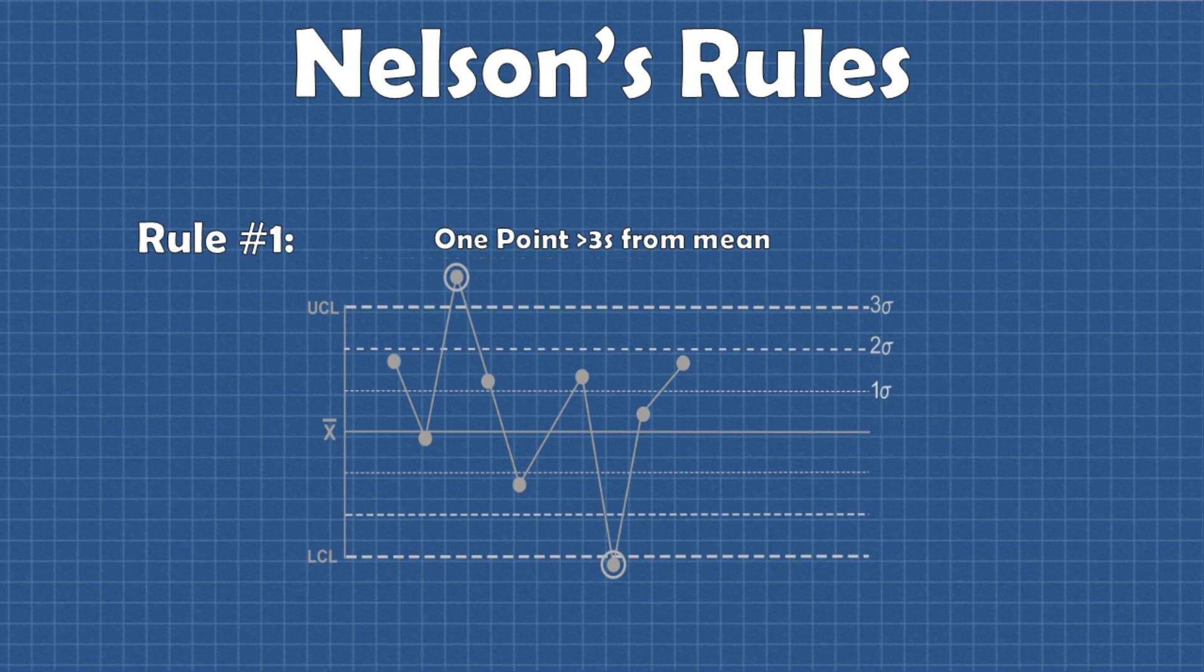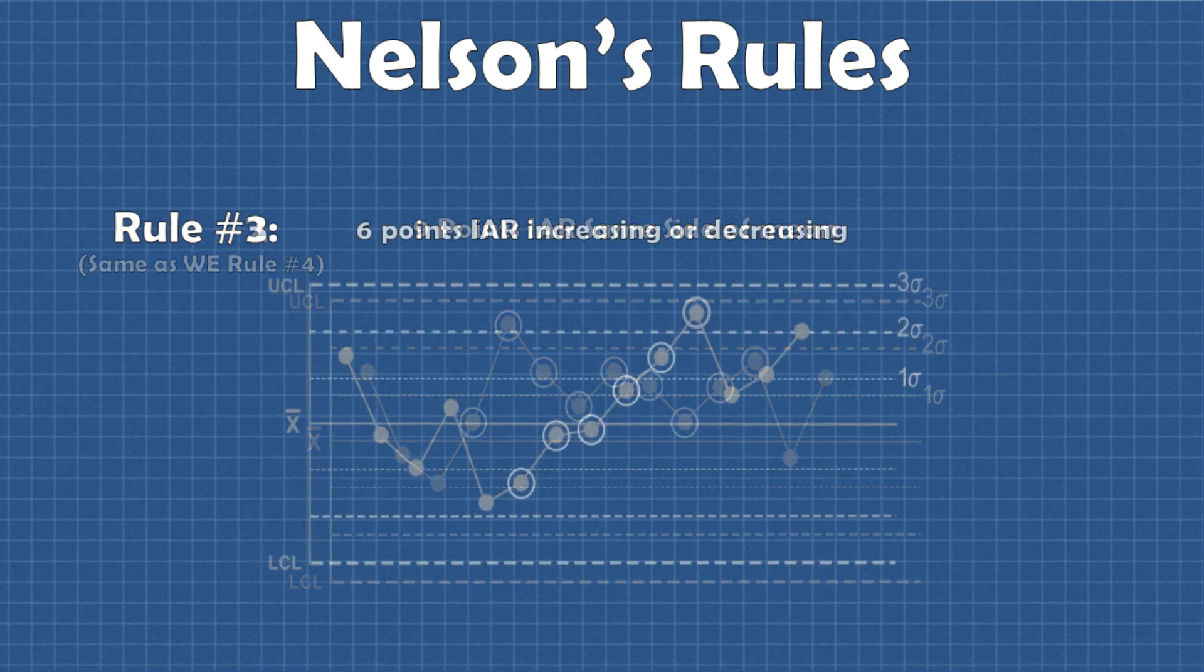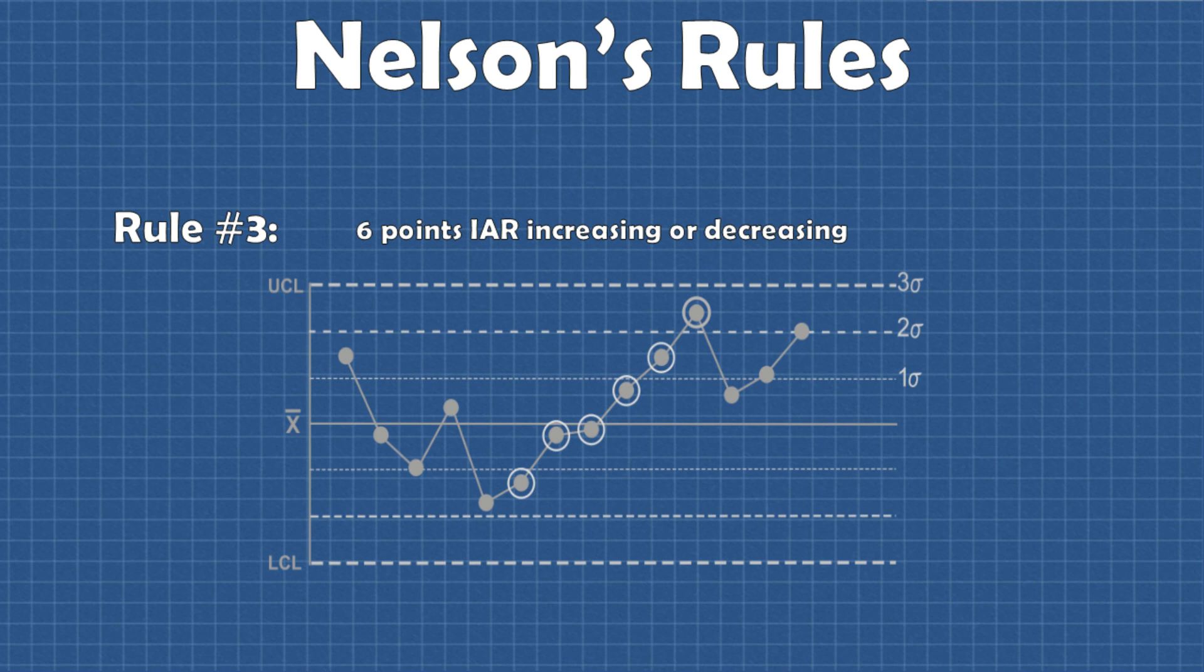Nelson's first rule was the same as Shewhart's and Western Electric's. His second rule was actually pretty much the same as Western Electric's rule number four, only he recommended using nine data points in a row. Then his third rule was a test for a pattern of six or more data points in a row increasing or decreasing.